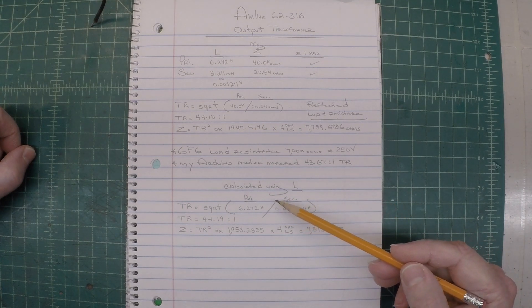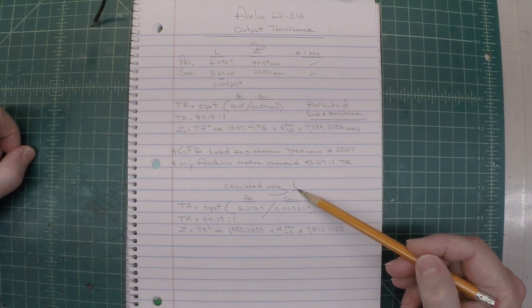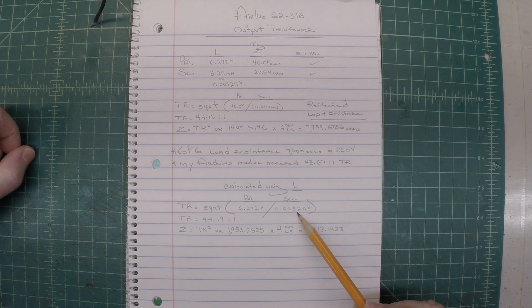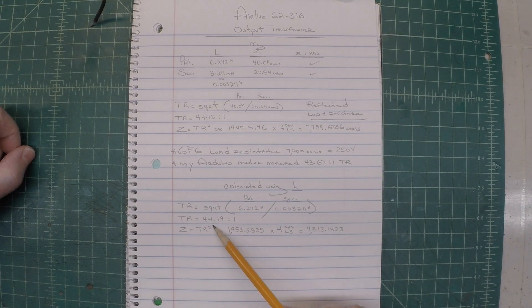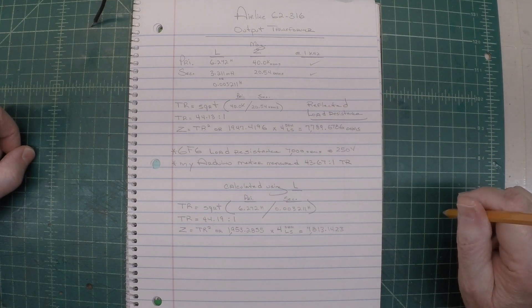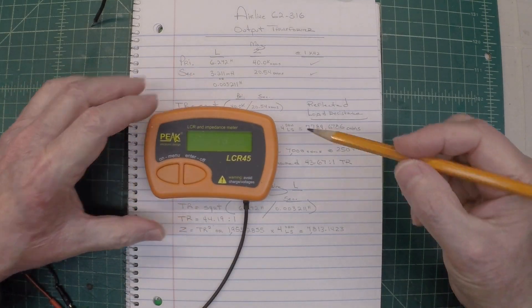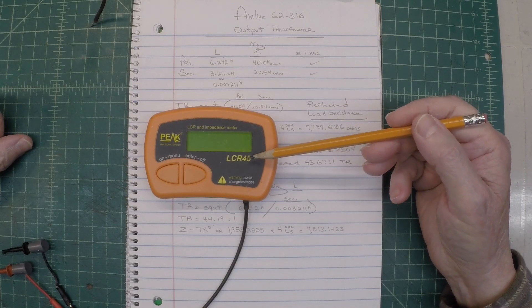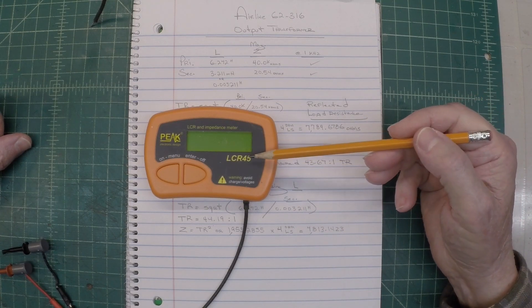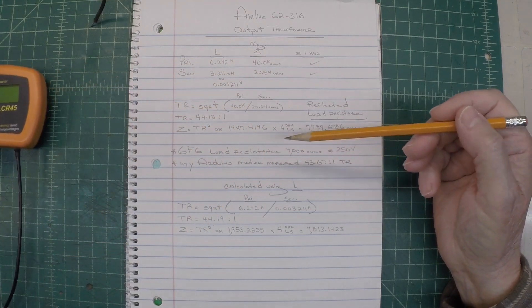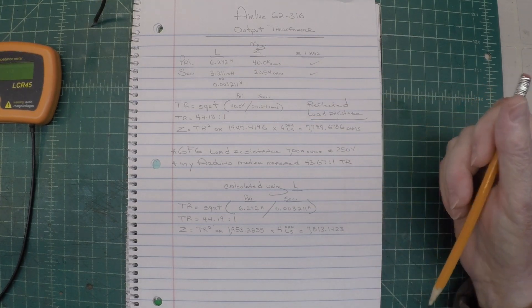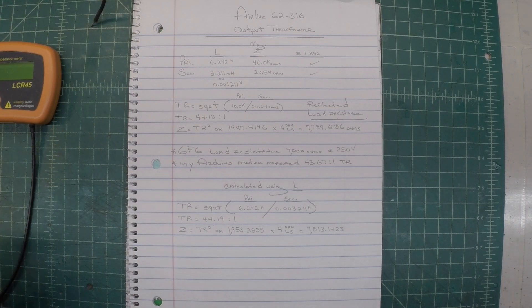You can use those same calculations using inductance. The square root of the primary inductance in Henrys divided by the secondary inductance in Henrys comes out to 44.19 versus the 44.13. So it's right in the same ballpark. I thought I would just show you guys how to do that just in case you haven't discovered that yourself. Or you may have another meter that has that same functionality or feature that you can leverage. But a pretty cool way of doing that and just some simple math. You can plug in the numbers in the calculator and back into the numbers for a power transformer or audio output transformer.